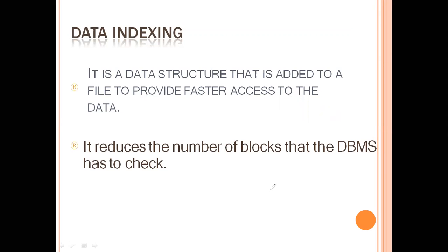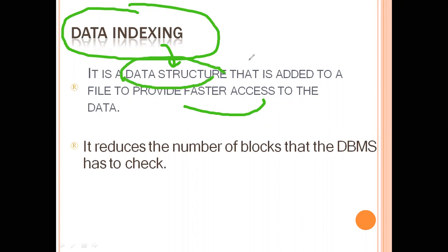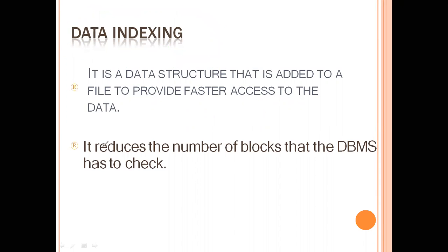Now the definition: what is indexing? We want to organize data in such a way that we have easy access to it. Indexing is nothing but a kind of data structure that is added to a file to provide faster access to that particular data. It reduces the number of blocks that the DBMS has to check. If indexing is there, searching is done easily because only a few blocks need to be searched, making the data easily accessible.